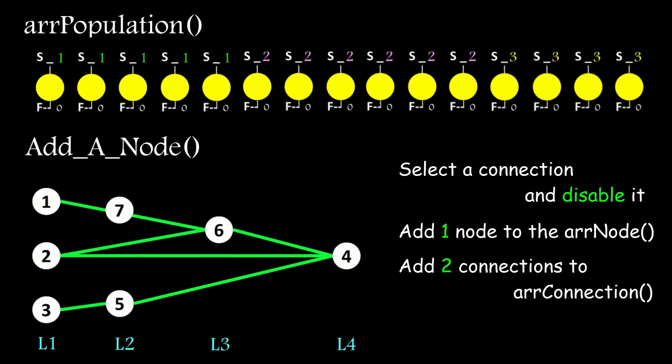So, select a connection at random, disable it, add one node to the node array, add two connections to the connection array, and get the layers right.